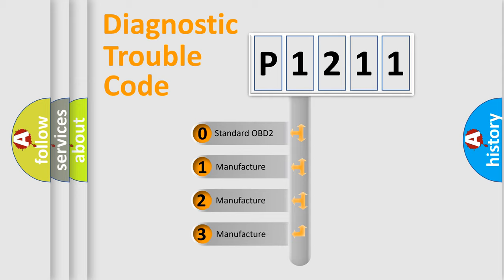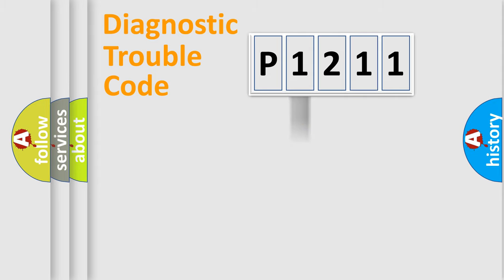If the second character is expressed as zero, it is a standardized error. In the case of numbers 1, 2, 3, it is a more prestigious expression of the car-specific error.